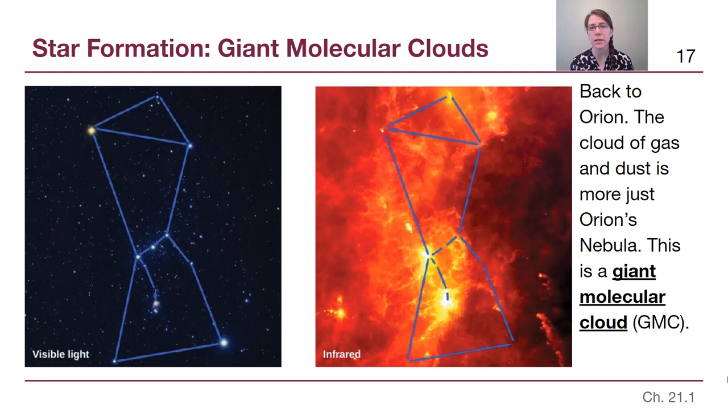So in our previous video from Chapter 20, we talked about the interstellar medium, the clouds of gas and dust, including Orion's nebula at the bottom of the sword scabbard here. If we look back at Orion, when we take a picture in infrared light, we are able to highlight that there is a lot more gas and dust here than just Orion's nebula.